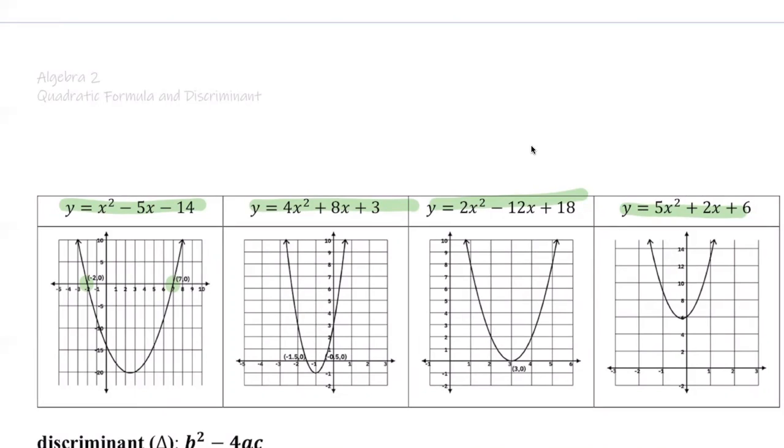Negative two comma zero, seven comma zero. And then you look at the second example, we also have two roots, and the graph would show you that there are two x-intercepts. We say there are two roots, one at negative three halves, and then the other one, it's negative one half.